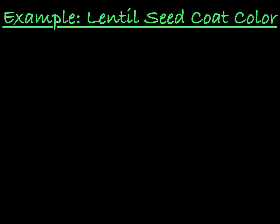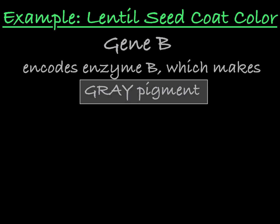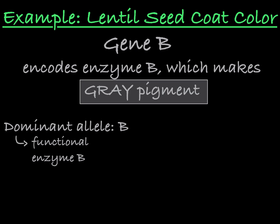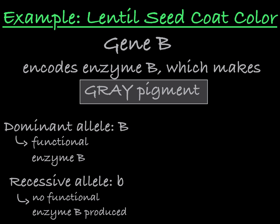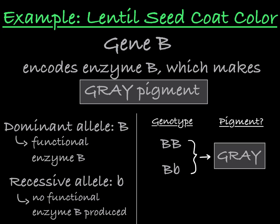The second gene, let's call it gene B, encodes enzyme B, which is able to make gray pigment. Much like we saw in gene A, gene B's dominant allele, let's call it big B, encodes a functioning enzyme B, and the recessive allele, little b, does not encode a functioning enzyme B. So any lentil plants that are homozygous dominant or heterozygous for gene B will be making gray pigment in the seed coat, and any homozygous recessive genotypes for gene B will not make gray pigment in the seed coat.